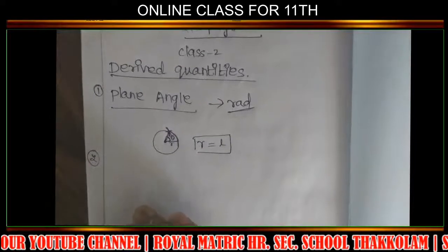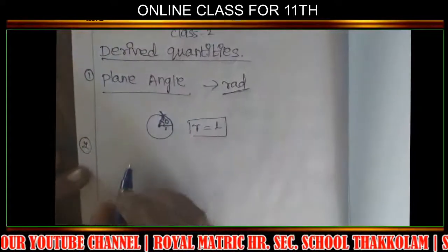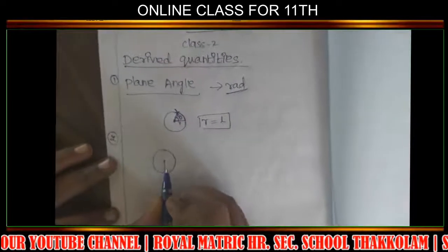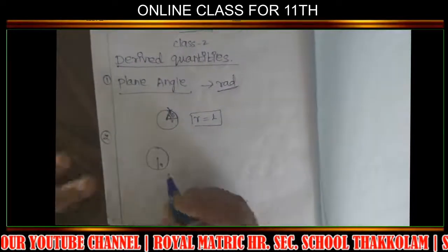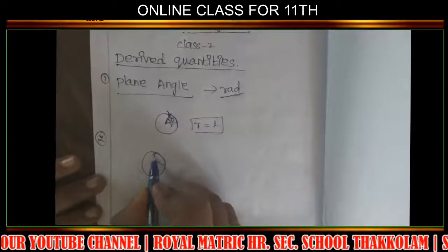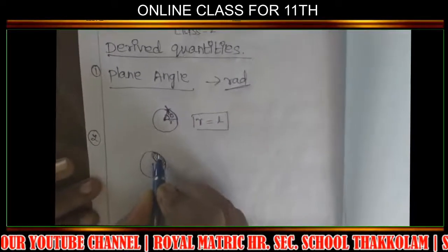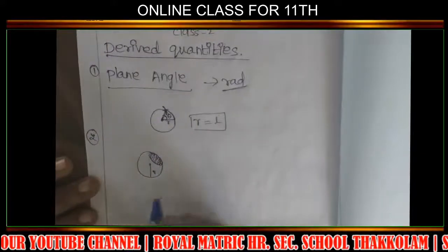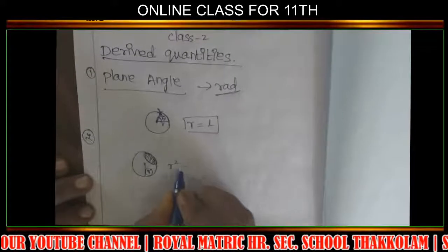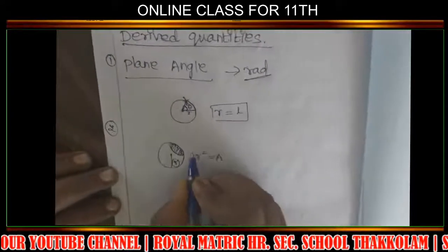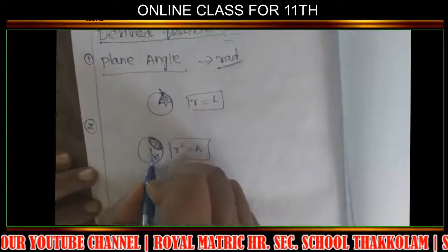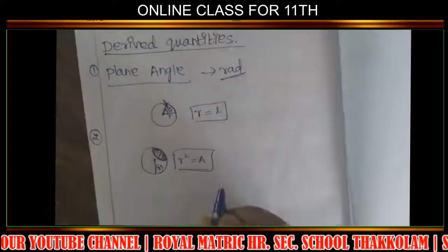The next thing is Solid Angle. Solid Angle means Steradian. Solid Angle is the same concept but for a sphere. Consider a sphere with a radius. Consider one surface area on the sphere — a full area. When that surface area equals the radius squared, that is the Solid Angle.